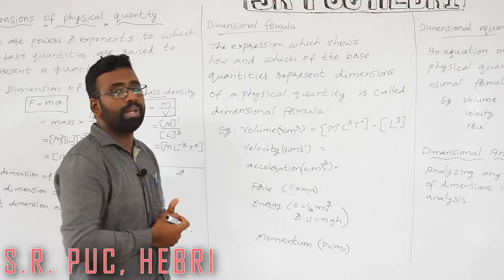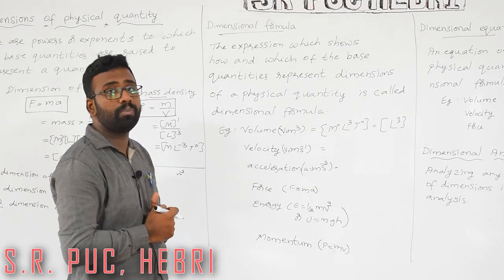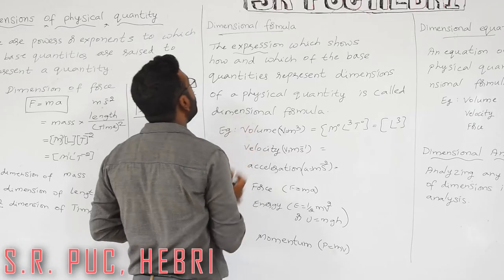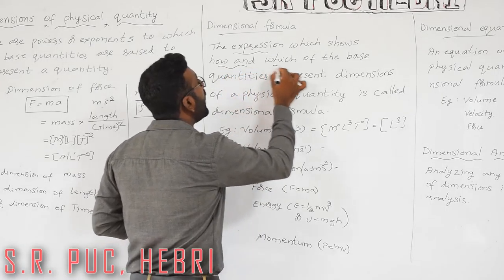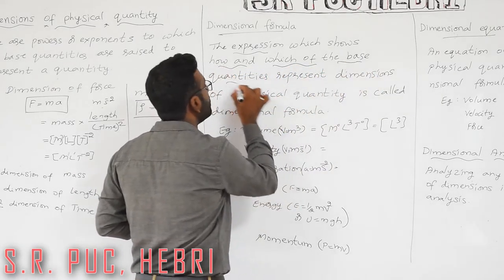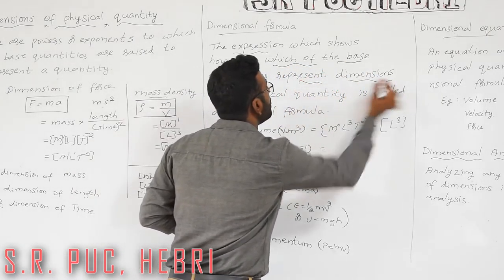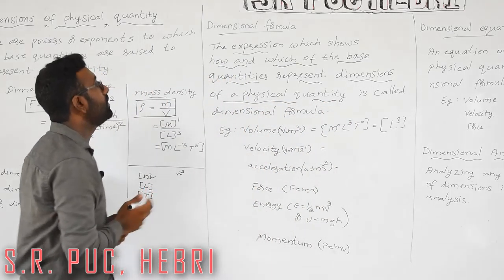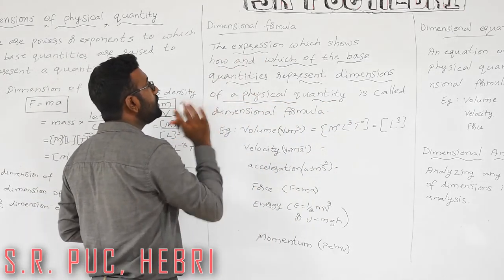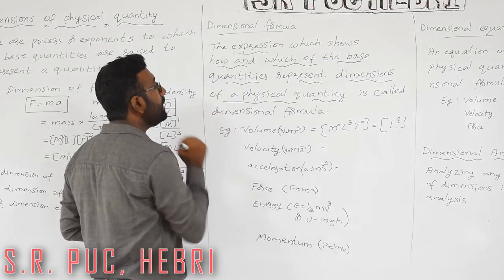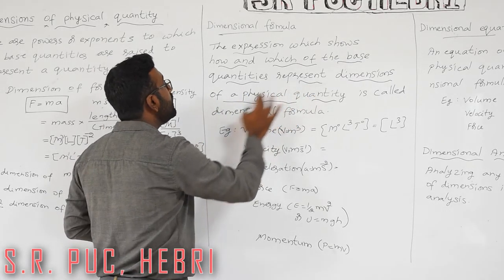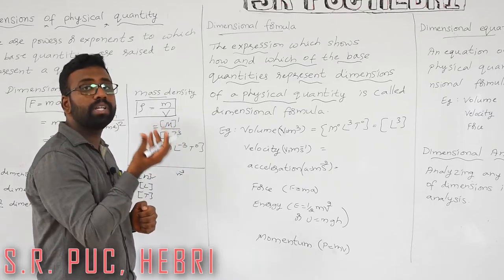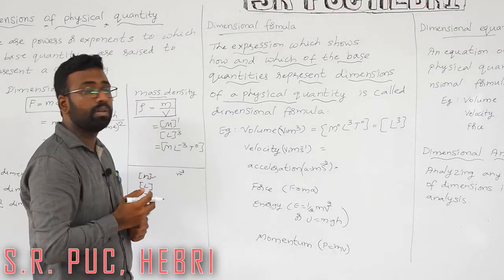A dimensional formula is an expression which shows how and which of the base quantities represent the dimensions of a particular physical quantity — i.e., which base quantities are representing the dimension.